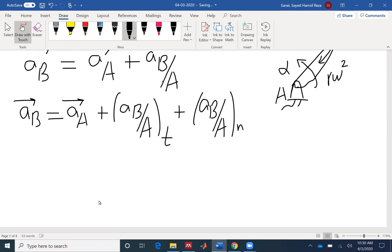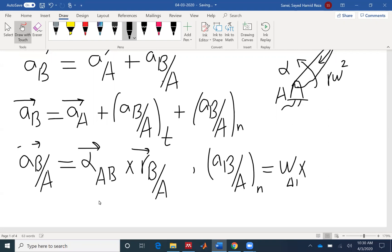The tangential component of acceleration in a vector formulation is alpha AB cross RB with respect to A. And the normal component would be omega cross, maybe omega AB cross R, or RB with respect to A.